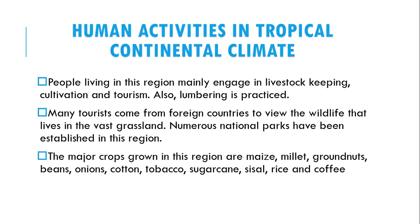The major crops grown in this region are maize, millet, groundnuts, beans, onions, cotton, tobacco, sugarcane, sisal, rice, and coffee. These are the many crops grown within this region. Thank you for listening — I hope that's clear.